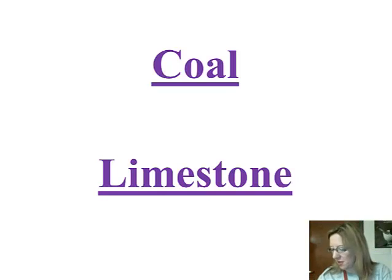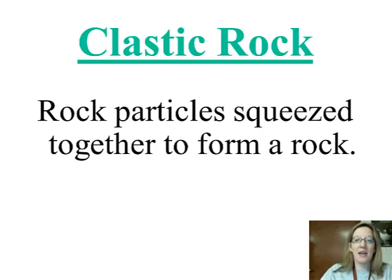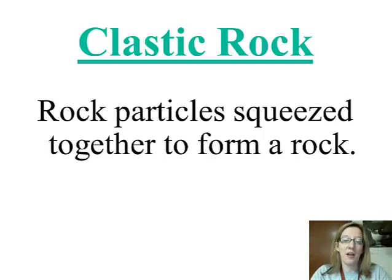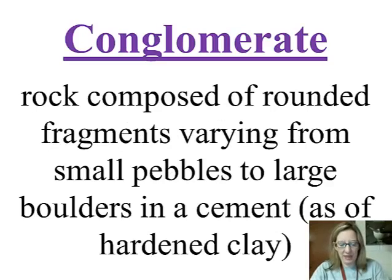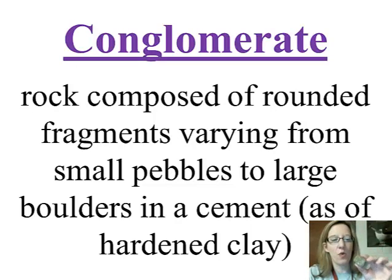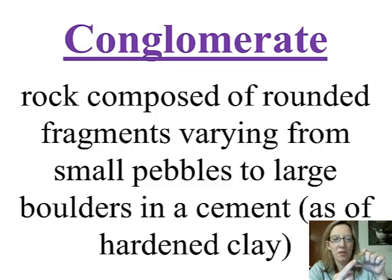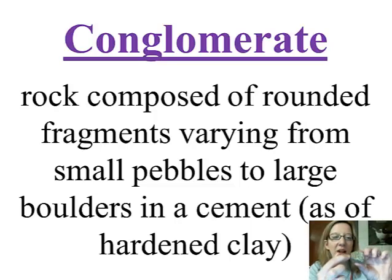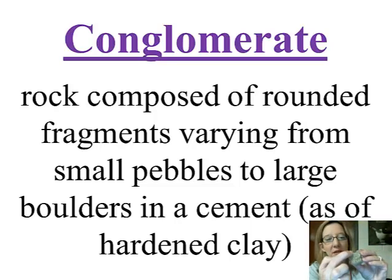Actually, the limestone I'm showing here is chemical — I don't have the organic limestone with me. Clastic rock is rock made from rock particles that are squeezed together to form a rock. A common example is conglomerate, which is made up of itty-bitty, teeny-tiny rounded pebbles that have been squeezed together. When we look at it in class, you'll see those tiny rocks glued together — that's a clastic sedimentary rock.